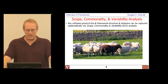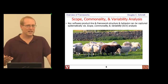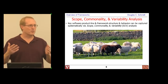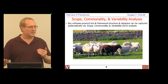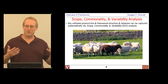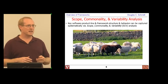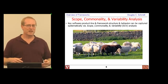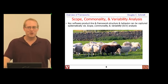Crucial to this is the concept of scope, commonality, and variability analysis. When you were a little kid, one of the things you did was look at pictures and identify which one doesn't look like the others — finding the pumpkin that didn't have a hat on it. That is very early training to become good at scope, commonality, and variability analysis. You're always looking for the thing that's common and the things that differ.